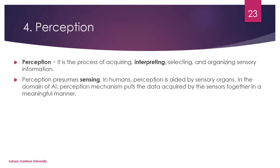The fourth component is perception. Perception is the process of acquiring, interpreting, selecting, and organizing sensory information. In humans, we perceive through our sensory organs. In AI machines, sensors are used to acquire information — the machine gathers and processes sensory data through its sensors.